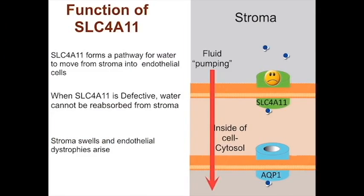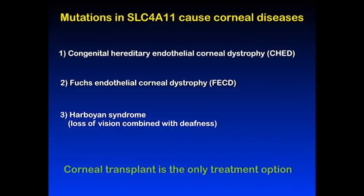When this goes wrong, for example in mutations of SLC4A11, water is not able to be moved out of the stroma, fluid accumulation occurs, and blinding corneal dystrophy disease occurs. In particular, congenital hereditary endothelial dystrophy, Fuchs endothelial corneal dystrophy, and Harboyan syndrome are caused by mutations in SLC4A11. Unfortunately, the only viable therapeutic strategy for these diseases is corneal transplantation.